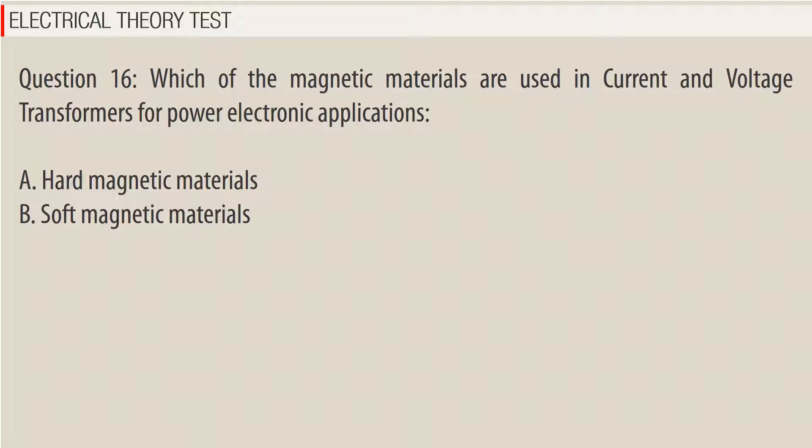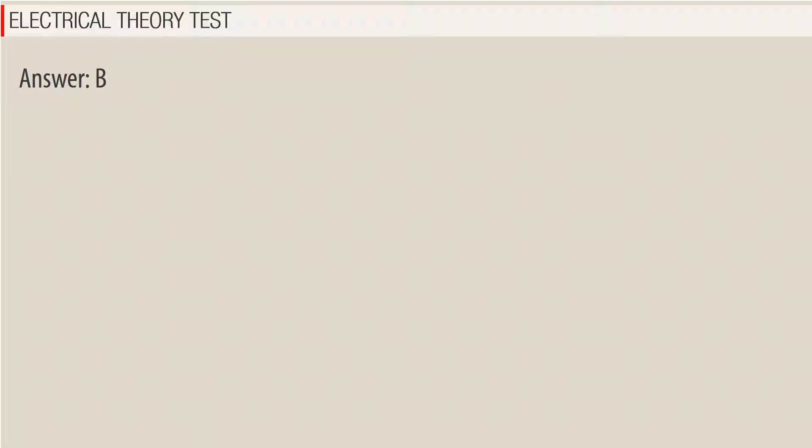Question 16. Which of the magnetic materials are used in current and voltage transformers for power electronic applications? a. Hard magnetic materials. b. Soft magnetic materials. Answer: B.